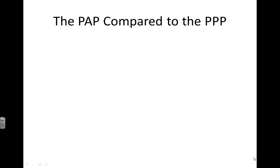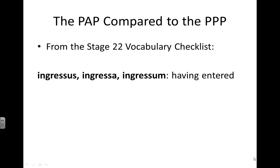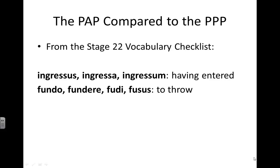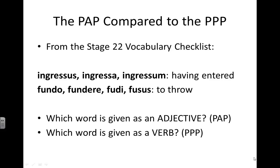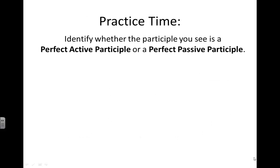Now when you look at the PAP and the PPP together, you might become a bit confused and wonder how to tell them apart. From the Stage 22 vocabulary checklist, consider this form: ingressus, ingressa, ingressum. Then consider the verb fundo, fundere, fudi, fusis. When you contrast the glossary entries, you can clearly see that one of them is an adjective and one of them is a verb. Ingressus, ingressa, ingressum is the adjective and therefore is the perfect active participle. Fundo, fundere, fudi, fusis with its four principal parts is clearly a verb, and so fusis is the perfect passive participle. There is a degree of memorization that must be done in order to master this particular skill.